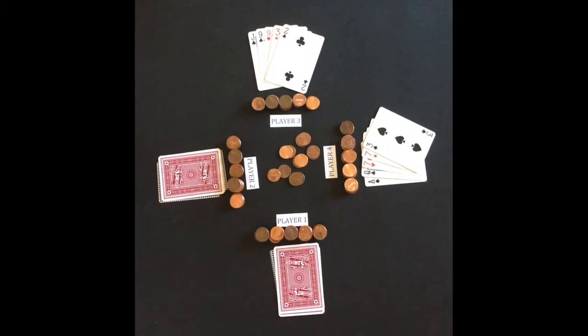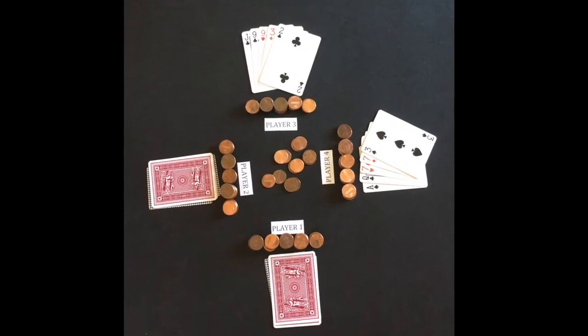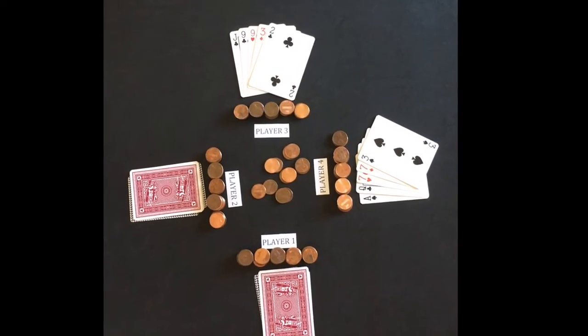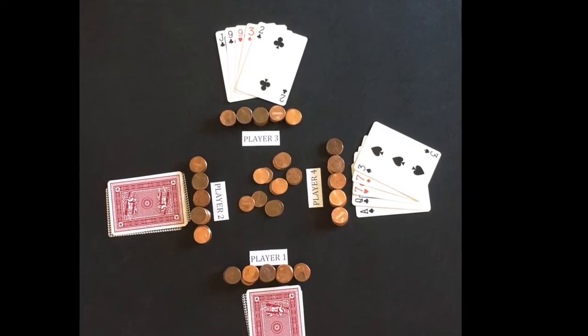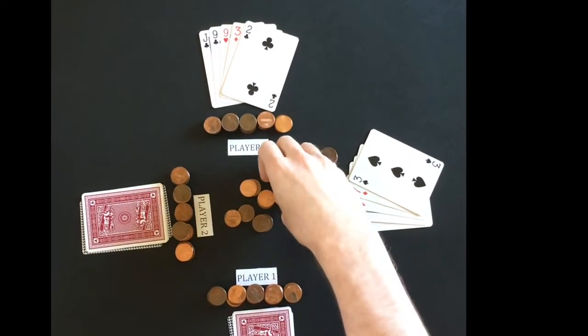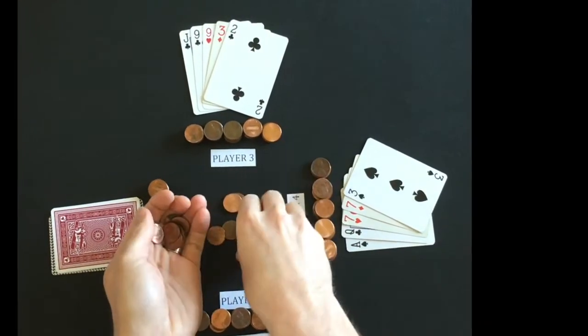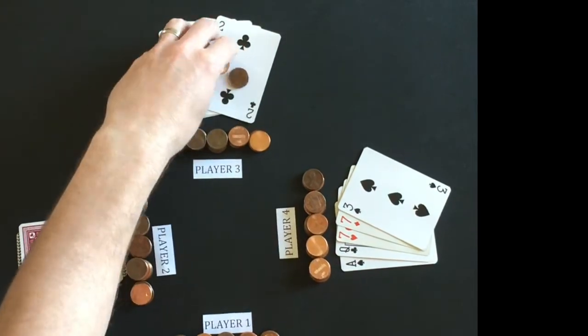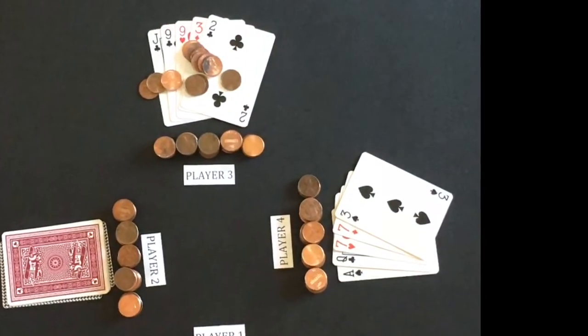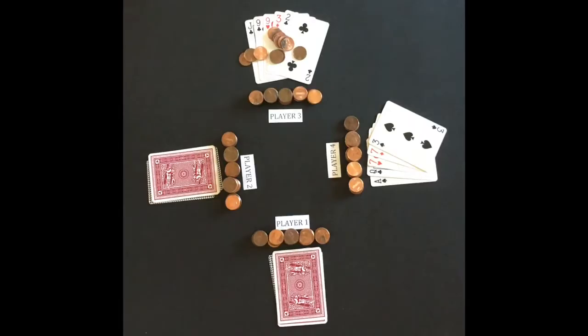The winner of the pot is the remaining player with the best poker hand. Player 3 and 4 show their cards and player 3 wins the pot in the middle with the best poker hand. The ranking of poker hands can be found in the description of this video. If there is a tie, the middle pot is split between the tying players.